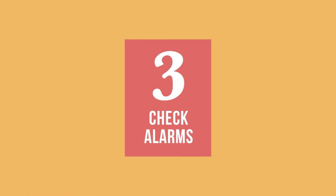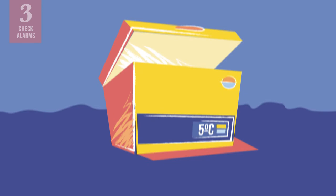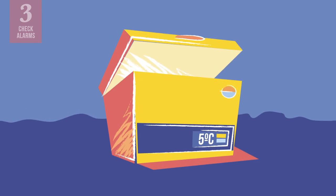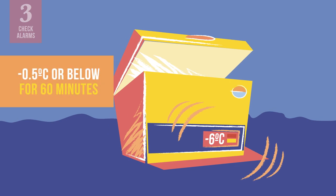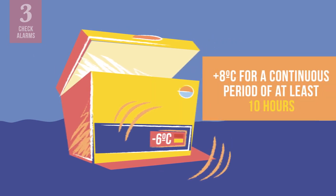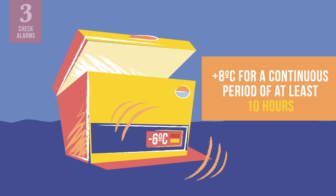The next task is to determine whether any temperature alarms have been triggered and when. A fridge tag is set to detect any temperatures that go too high or too low for too long of a period. If temperatures do go too high or too low for too long, an alarm will appear on the display of the fridge tag. Typically, an alarm will be triggered if refrigerated temperatures fall to negative 0.5 degrees Celsius or below for 60 minutes, or if the temperature exceeds 8 degrees Celsius for a continuous period of at least 10 hours.